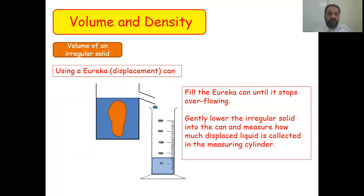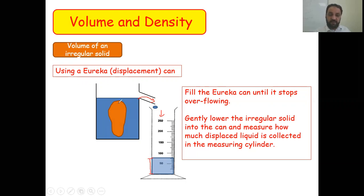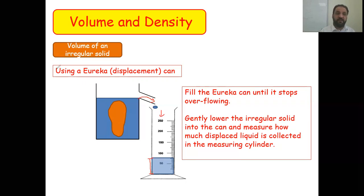Another method uses a Eureka displacement can. Fill it with water up to the spout line, then immerse the solid object. Water will overflow and fall into a measuring cylinder placed beneath the spout. The amount of water collected equals the volume of the irregular solid, because the solid displaces the water.